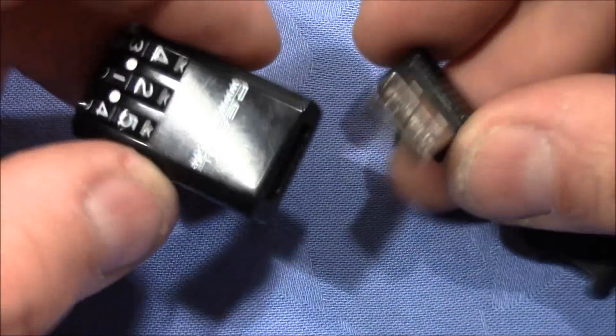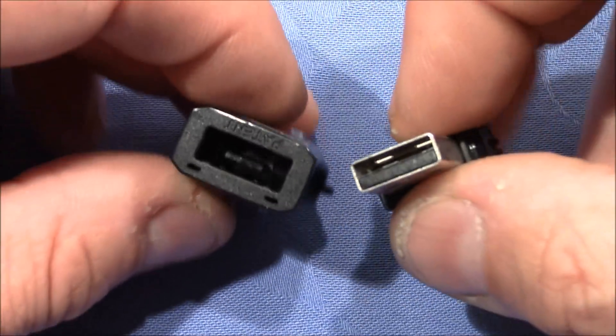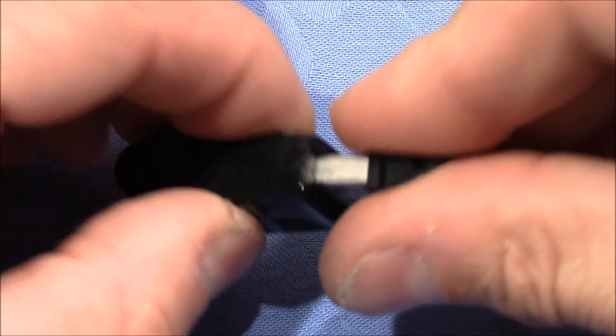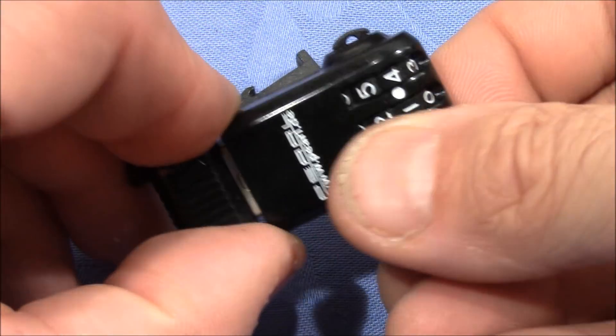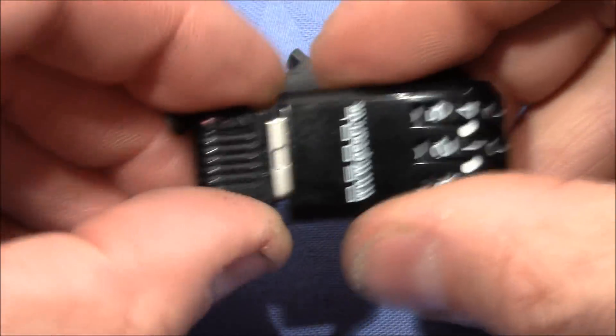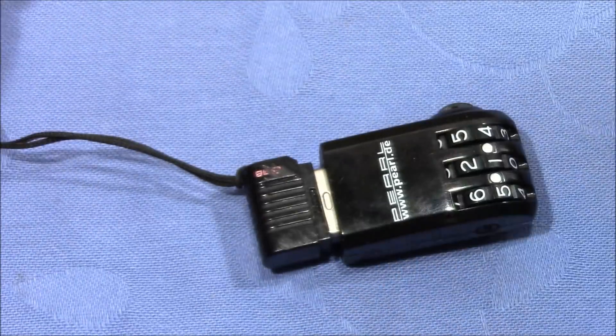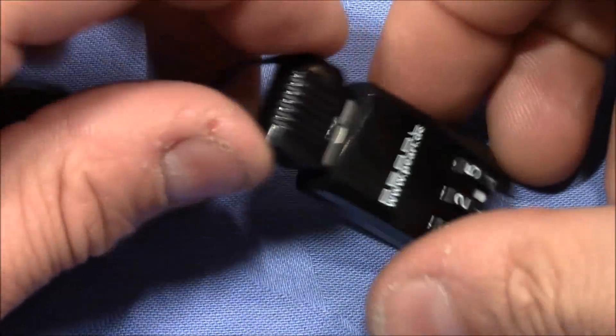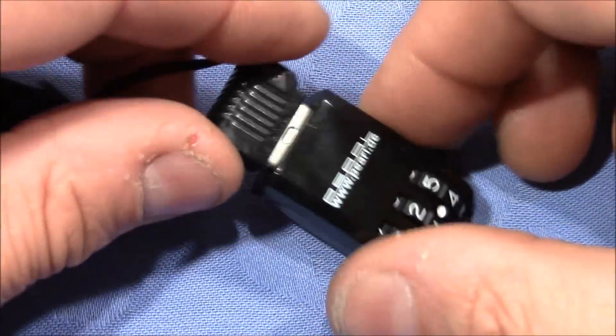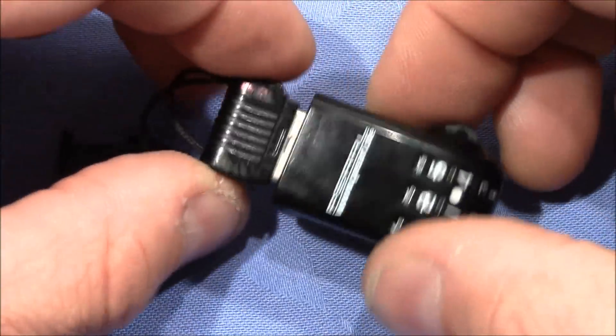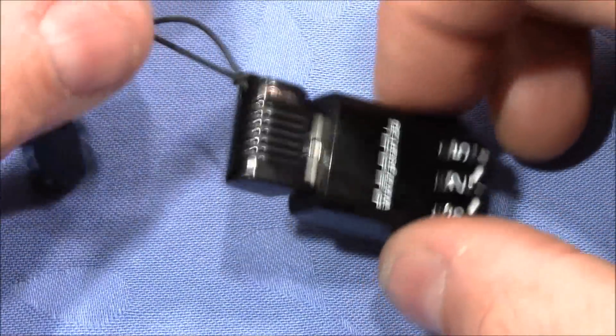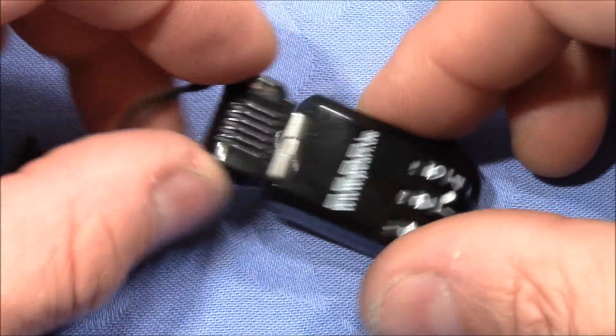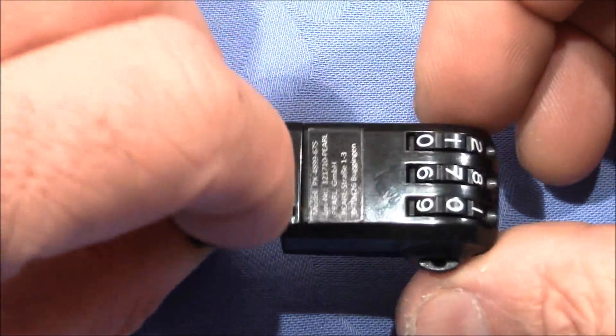So this is a USB stick, and when you put this in this lock, you can change the code and you cannot remove it anymore. So if this is on your table because you need it or whatever, no one can just grab it and copy what is on your USB stick. It's a neat little idea.